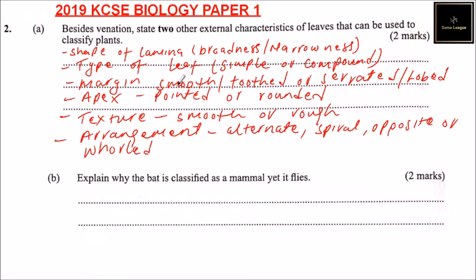So those are the other characteristics that can be used to classify leaves of a plant. If you mention any two of these — I've given you one, two, three, four, five, six — any two of these should be able to get you those two marks.